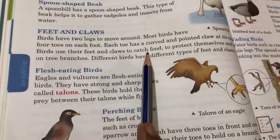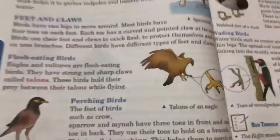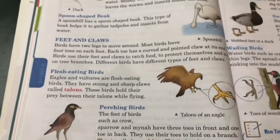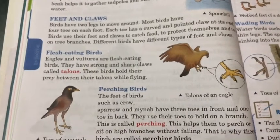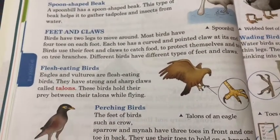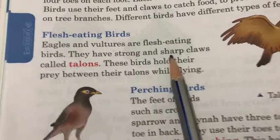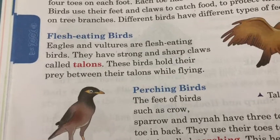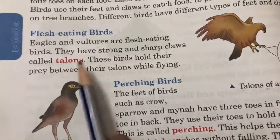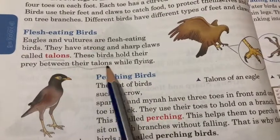Birds use their feet and claws to catch food, to protect themselves and to sit on branches. Birds have different types of feet and claws. Flesh-eating birds like eagle and vulture have strong, sharp claws called talons. These birds hold their prey between their talons while flying.